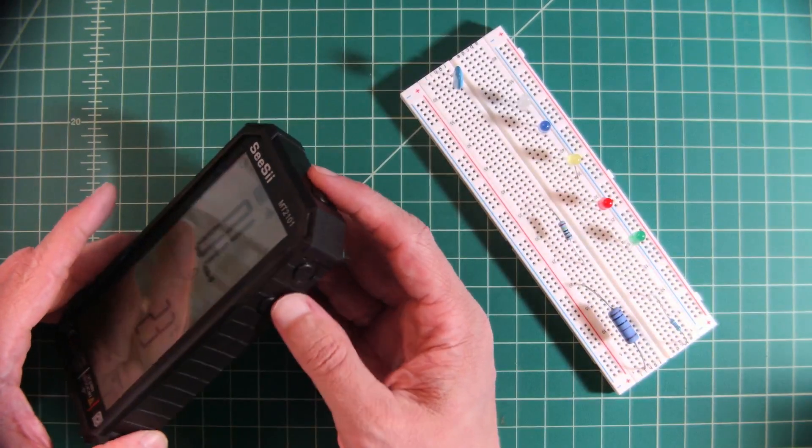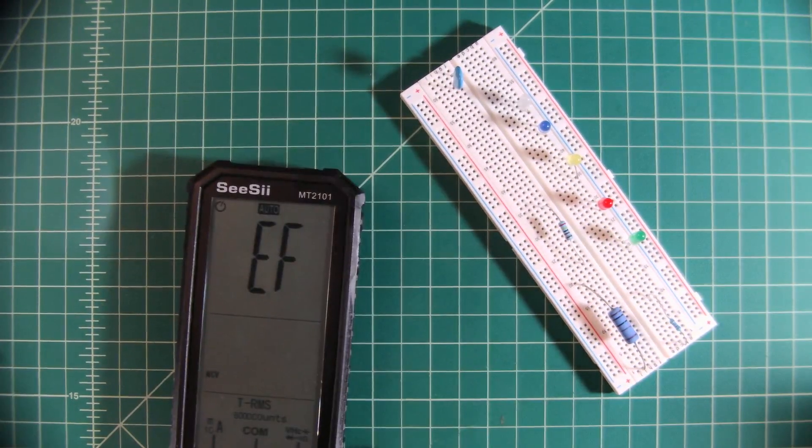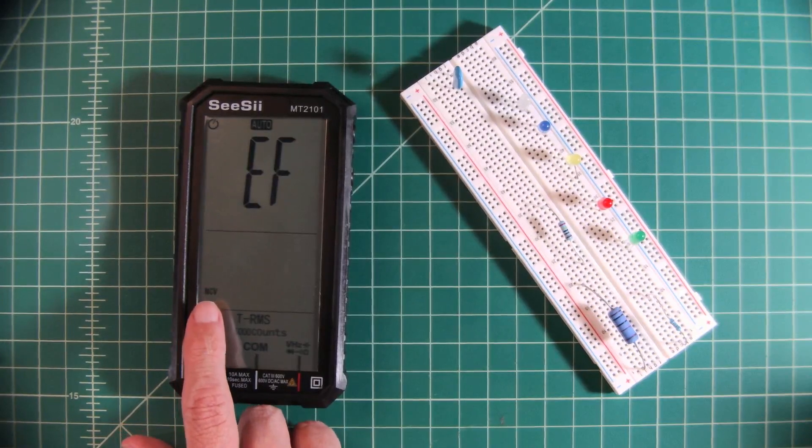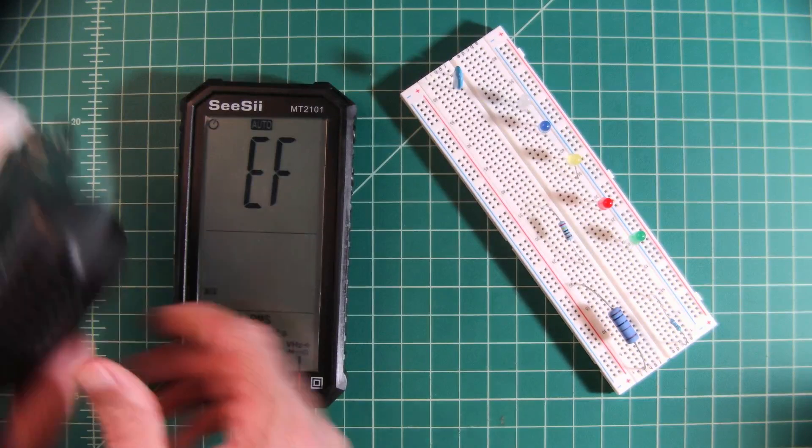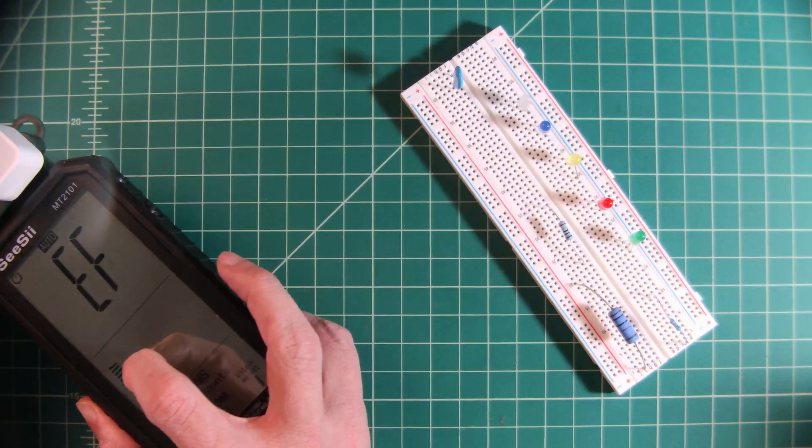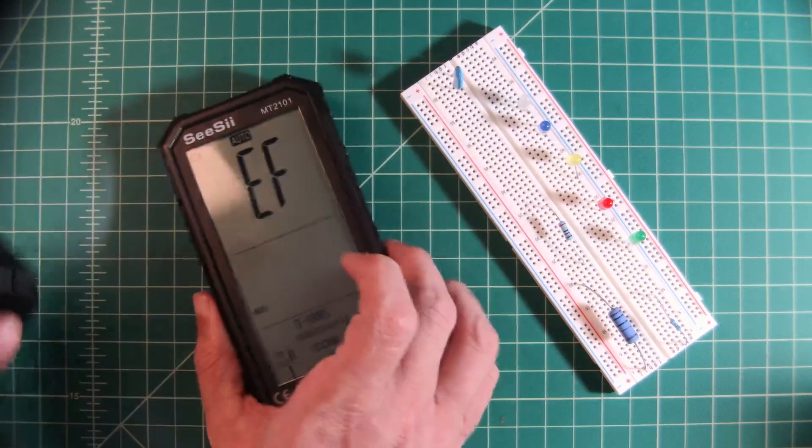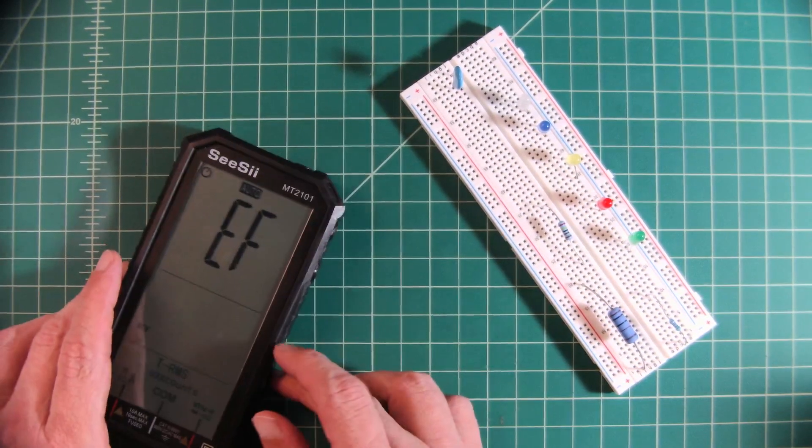So I set the device into non-contact voltage mode and you can see that right here. And I'm just going to bring over this extension cord. And there you can see a meter and it is alerting. And it's notifying me that there is voltage on this cable. Okay. Let's crack this thing open and see the insides.